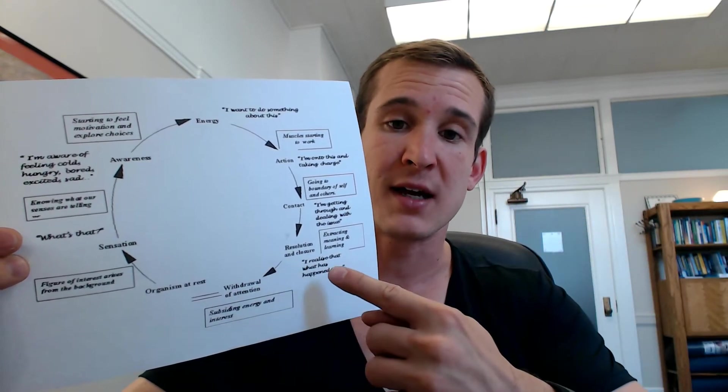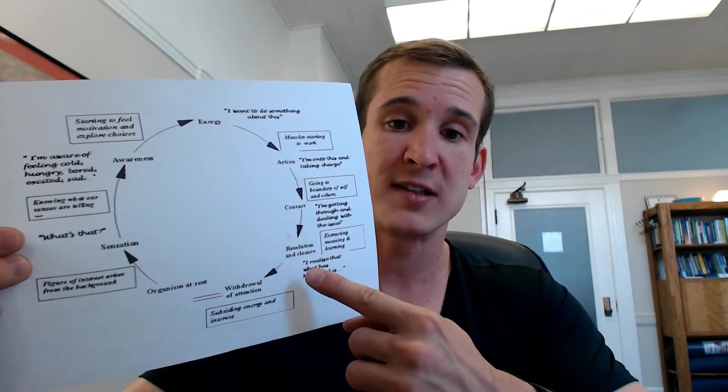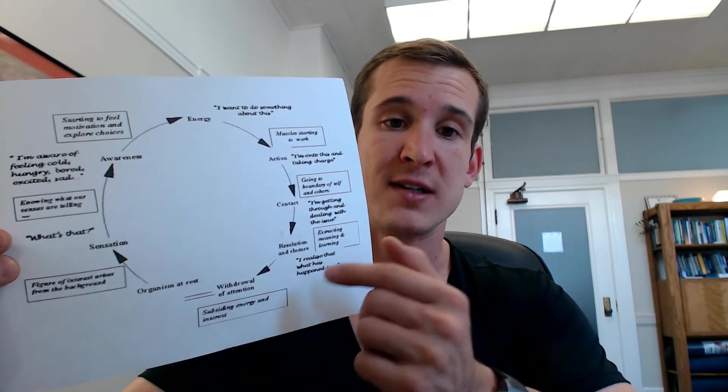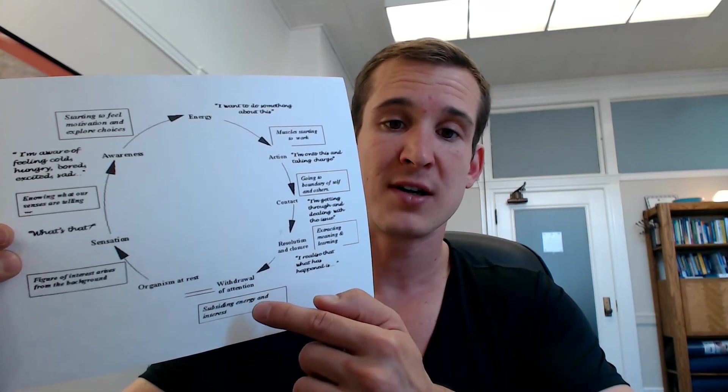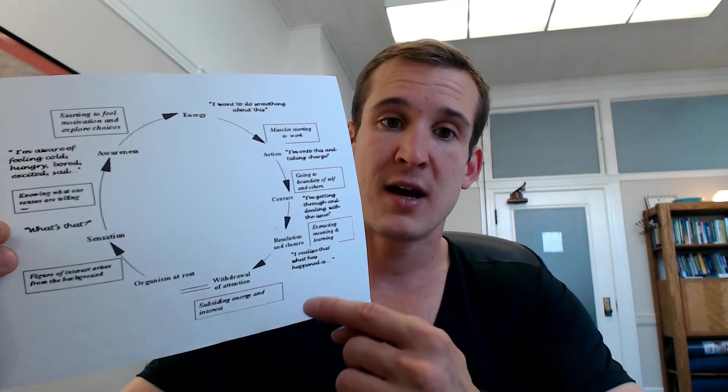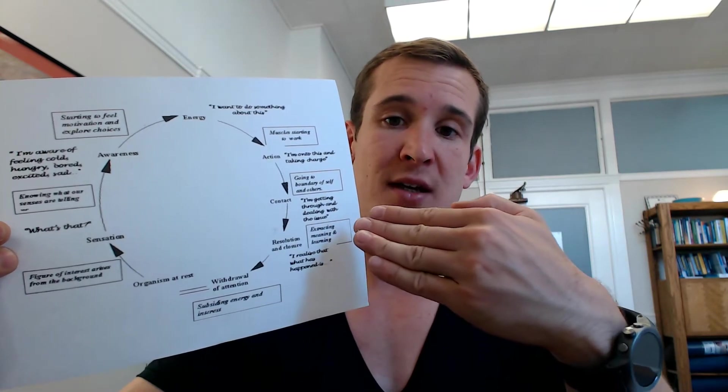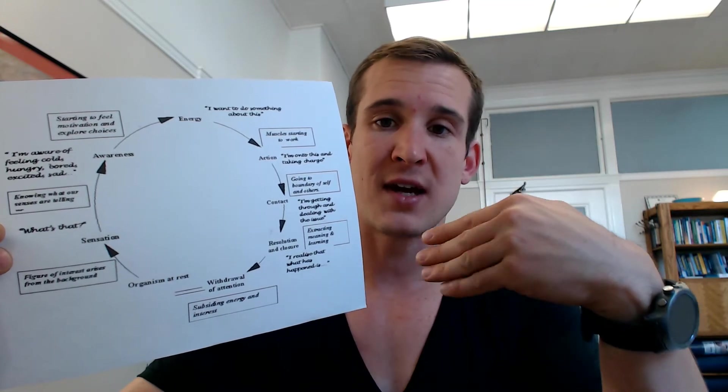So if you're able to make contact, let's say you're able to get that food item and ingest it, you have some resolution and closure, and the primary sensation of grumbling and hunger has been fulfilled, and the energy can go back to rest. Now, along this whole need formation and destruction cycle, there can be incomplete things that happen. So in relationships with people, we might not always make authentic full contact, and we can let our anxiety get in the way.